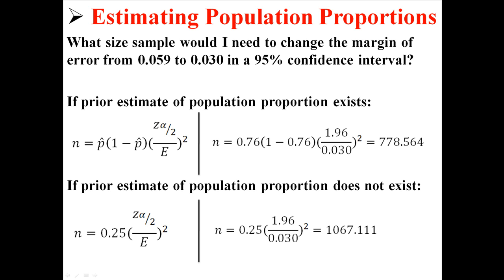In the first example, I find out that we would need a sample size of 779. I'm rounding up because there's no half of a person. We need 779 people in order to have a margin of error of 0.030. And if we didn't have that prior estimate, we'd actually need 1,068 people in order to have a margin of error of 0.030.